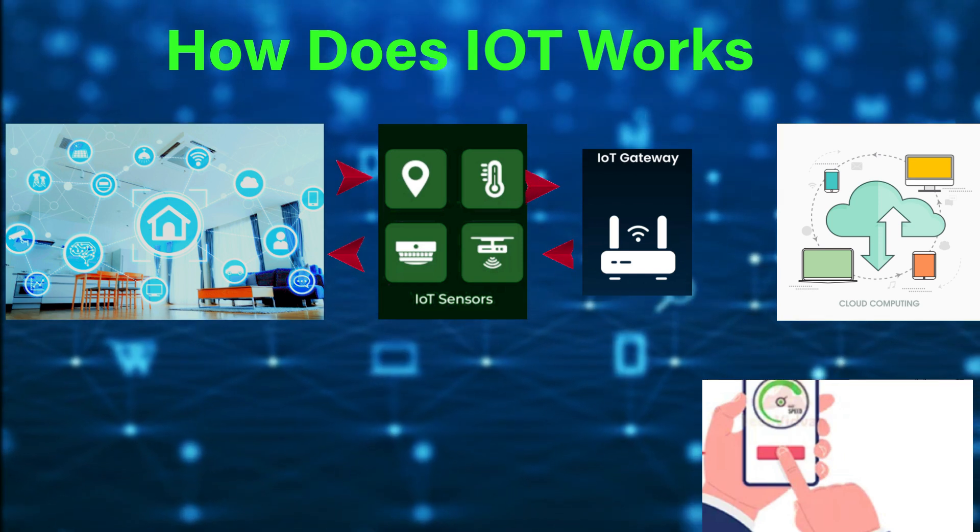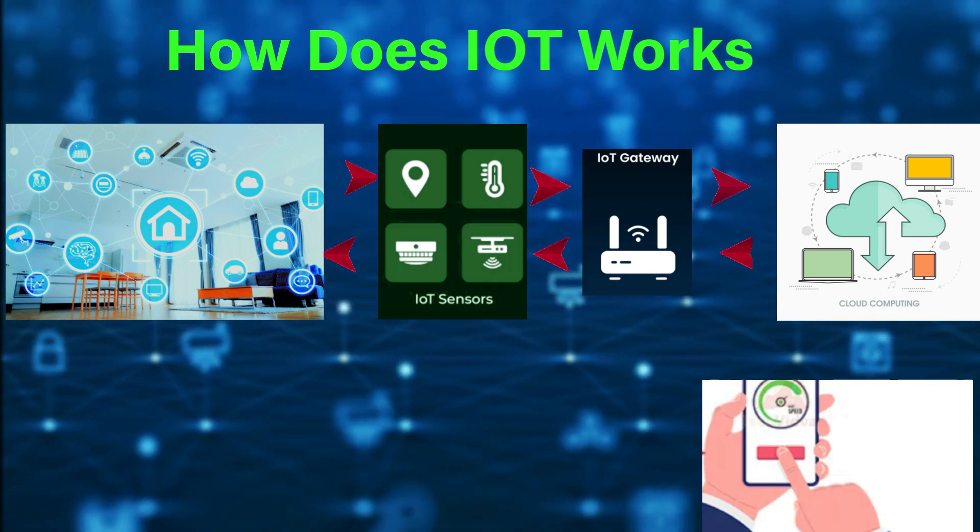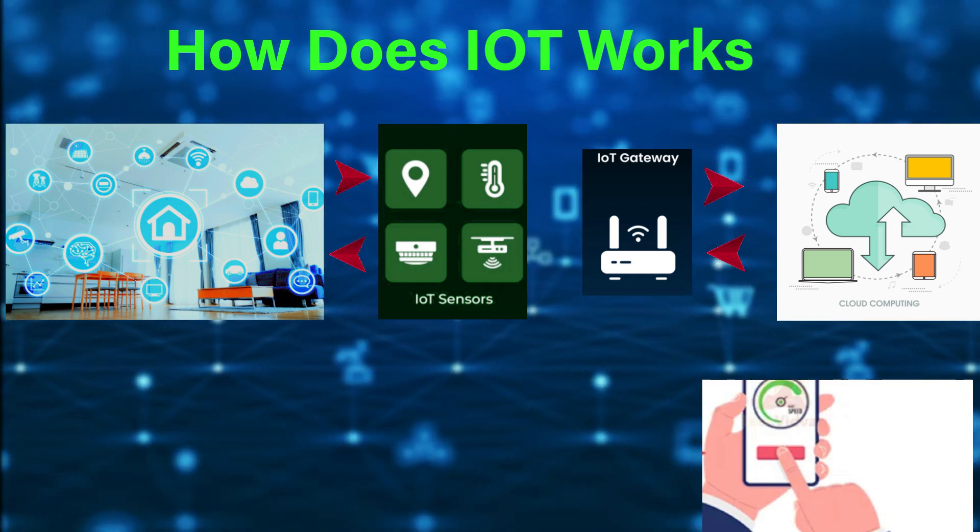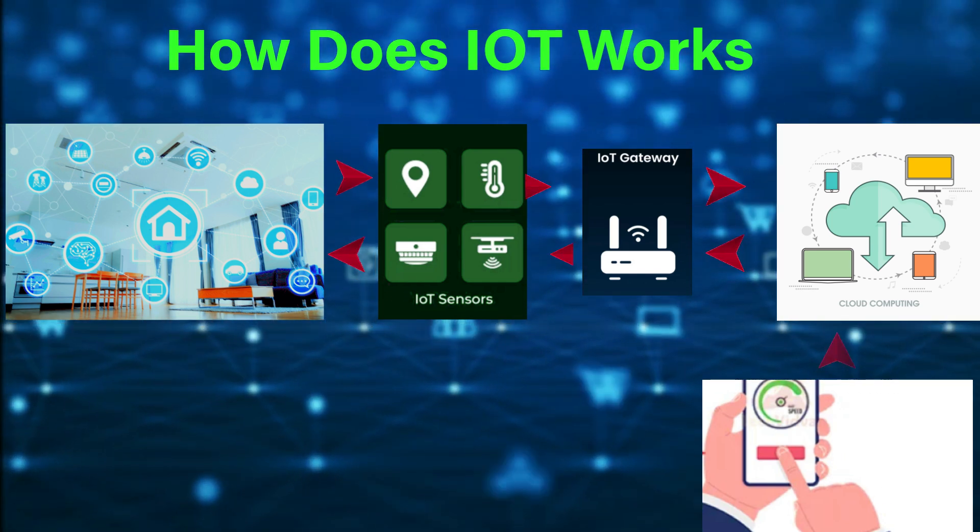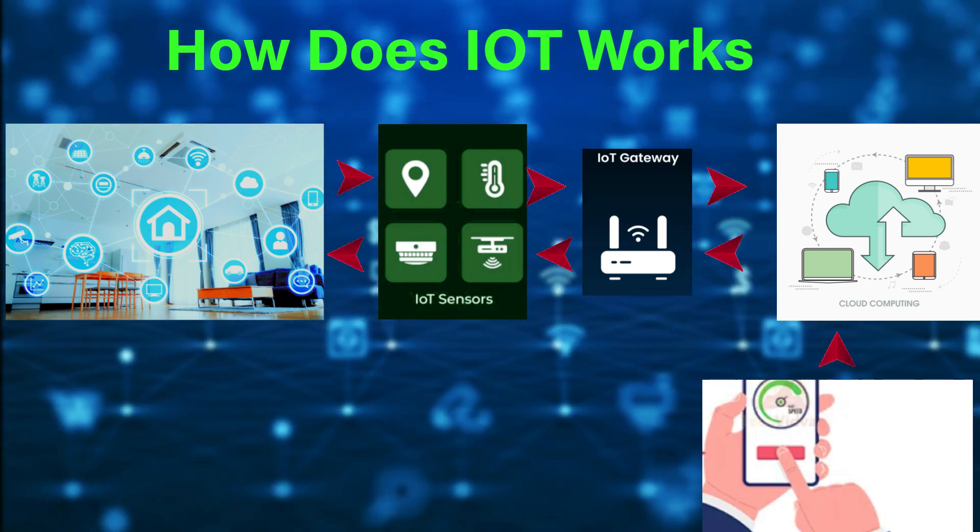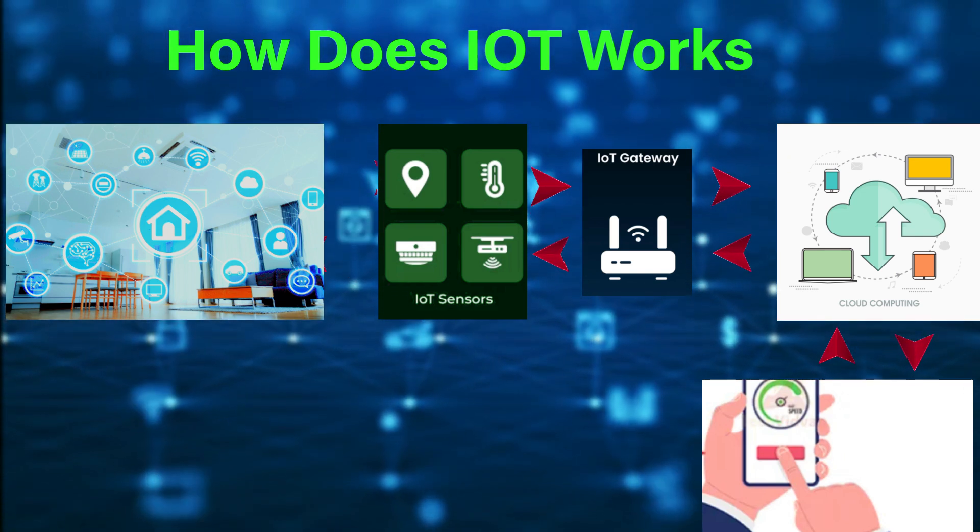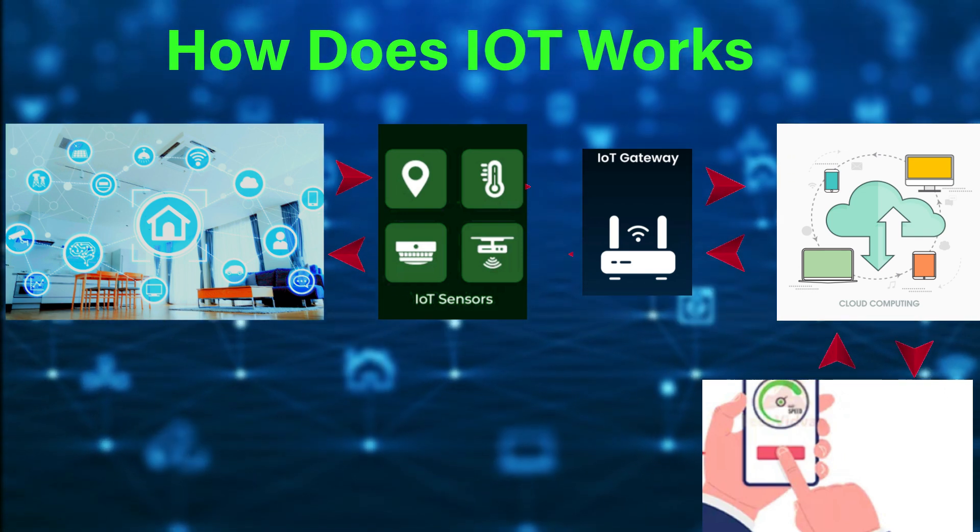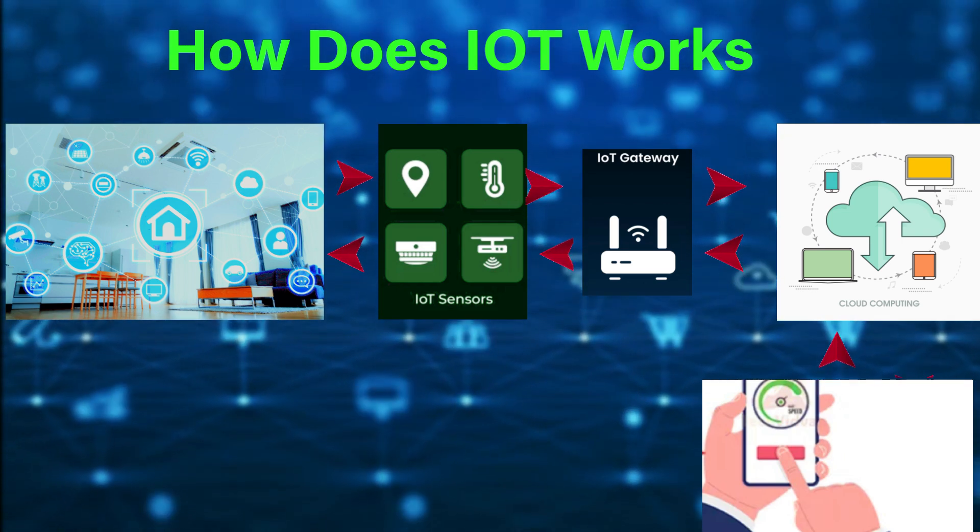Once the cloud receives the information from gateways, the cloud will analyze the data received from the gateways and pass the information to the controller to perform the actions. Your controller can perform the action based on the instruction from the cloud. These actions can be performed in your mobile app or at different locations.